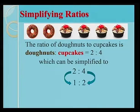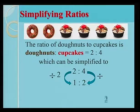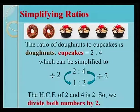1 is to 2. We divide both numbers by 2. The HCF of 2 and 4 is 2. So, we divide both numbers by 2.